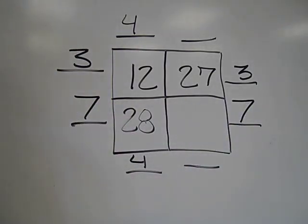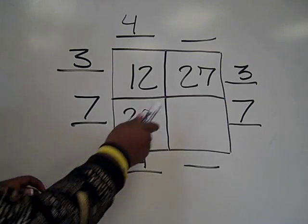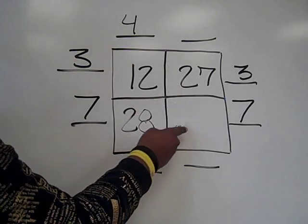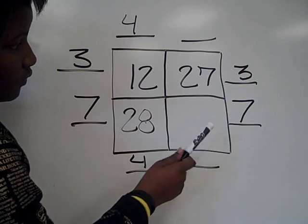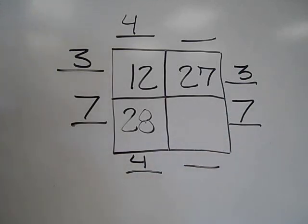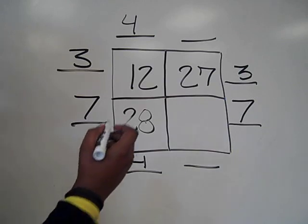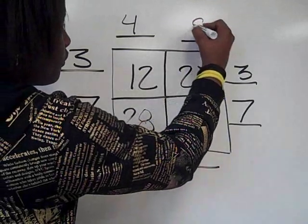What column are the twenty-seven and the unknown product in? We know that twenty-seven is in the threes row, so we can ask, three times what is twenty-seven? The answer is nine. Write nine above and below this column.